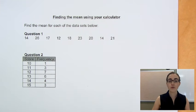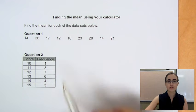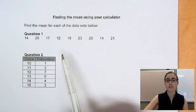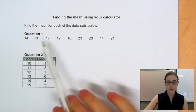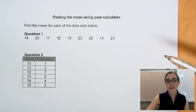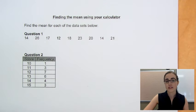In this video, I want to have a look at how we can use our calculators to find the mean of a data set. So we've got two different data sets here. For this first one, it's a fairly small data set, so we could just find the mean of this by adding all of our numbers together and then dividing that answer by the number of scores that are there.